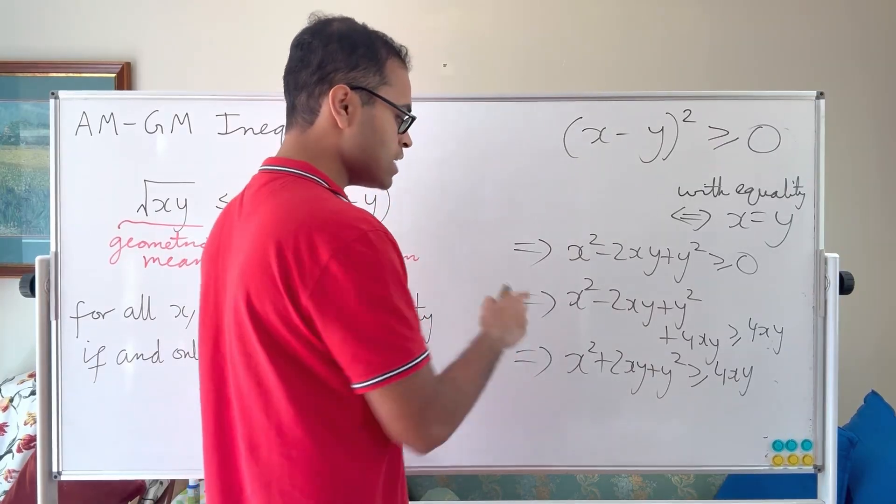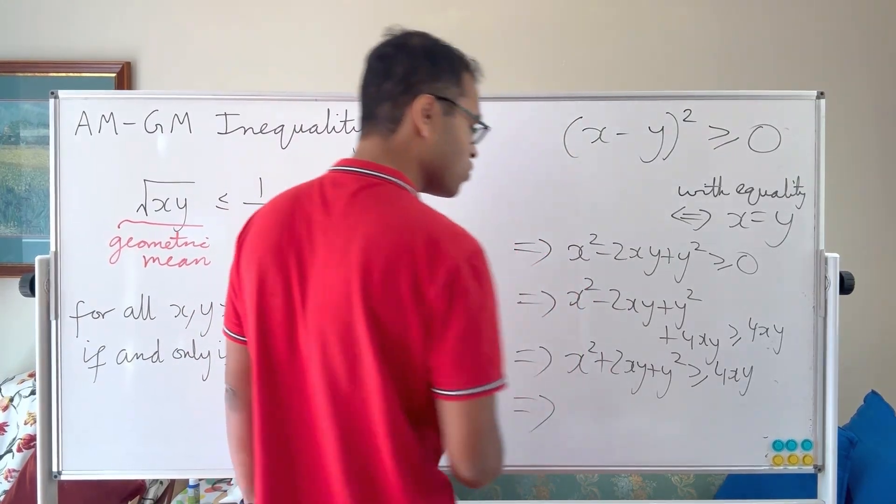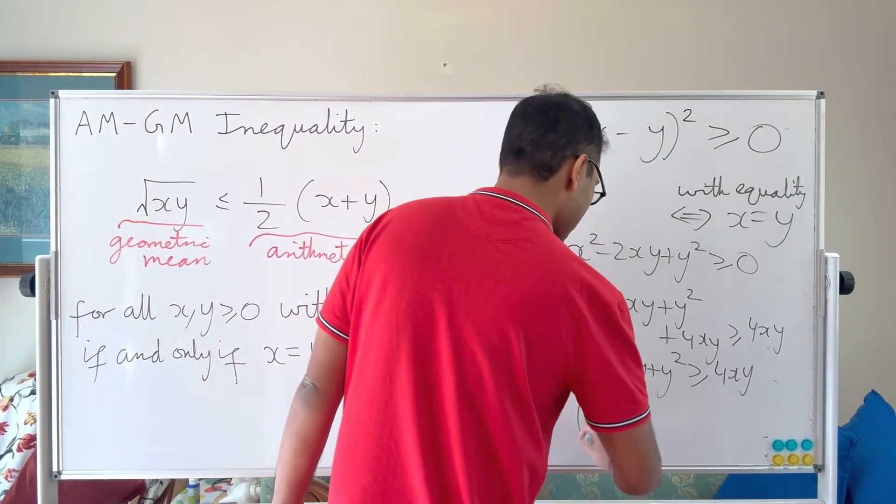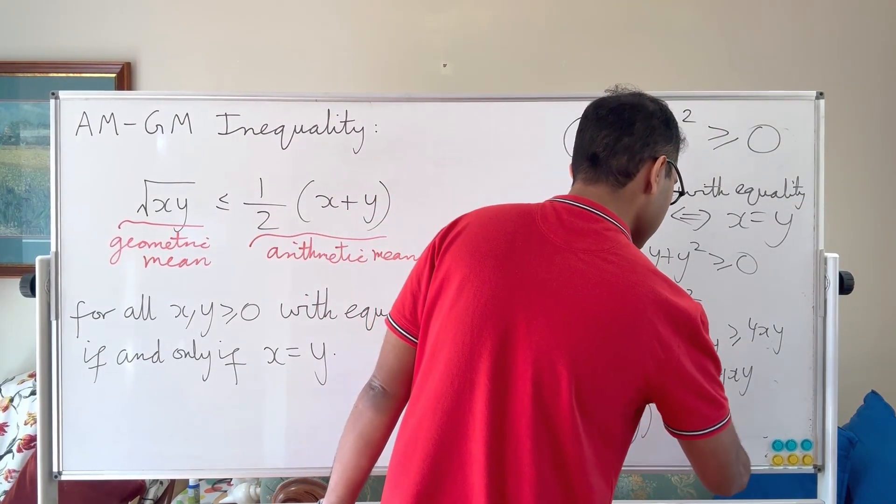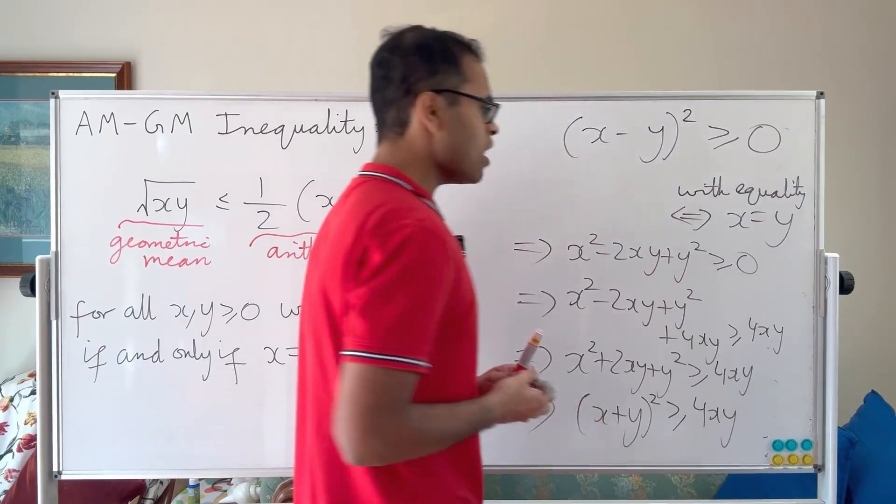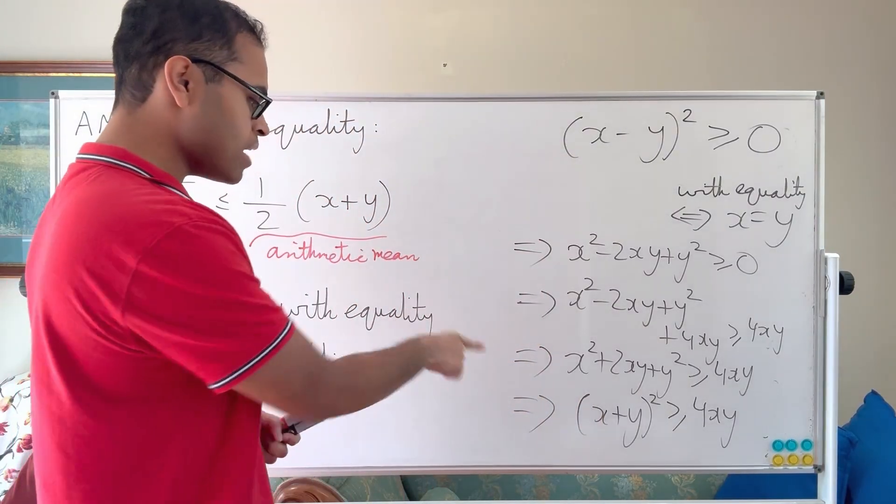Let's now finish this off. We say x squared plus 2xy plus y squared is the perfect square of x plus y. That's again the binomial theorem. So we get x plus y squared is greater than or equal to 4xy. Now we're almost done.